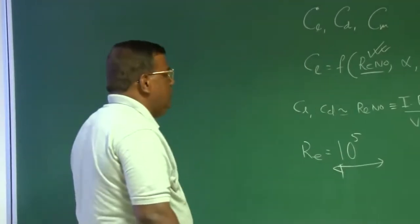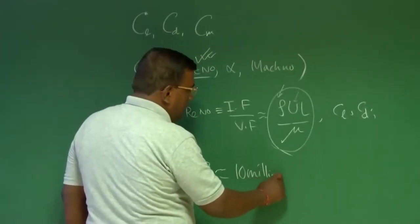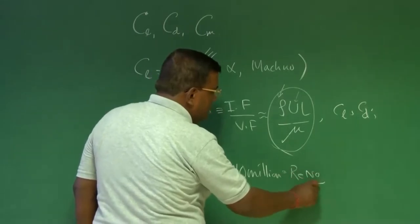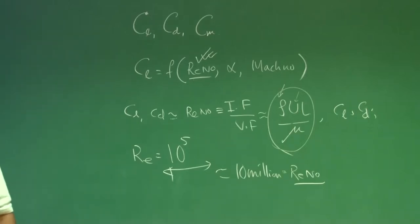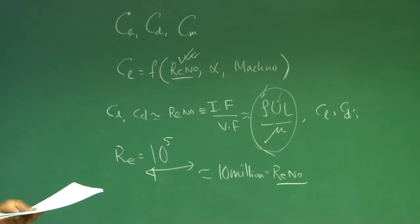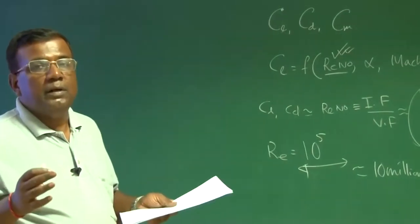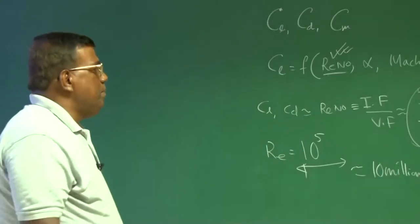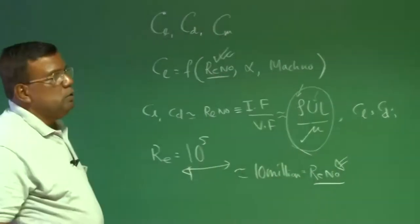Most airplanes fly with a wing Reynolds number of around 10 million — that is a typical number. So it is almost in the turbulent zone, not very far from laminar, unless you design something we call a laminar aerofoil, where we ensure the Reynolds number satisfies the condition for laminar flow. All those details we will be talking about as we go explicitly into the design with case studies.